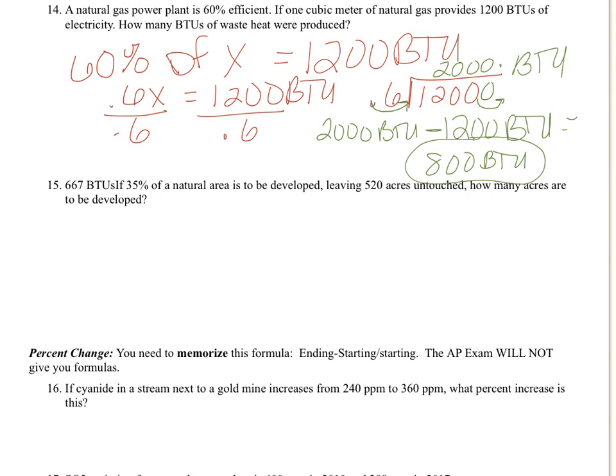Number 15, if 35% of a natural area is to be developed, leaving 520 acres untouched, how many acres are to be developed? If 35% is developed, that means if we subtract 100% minus 35%, we're going to get 65%. So we know that 65% is untouched.